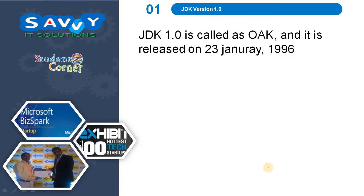JDK version 1.0 is called Oak and it is released on 23rd January 1996. The features of 1.0 are those we already discussed as Java features — those belong to the first version.